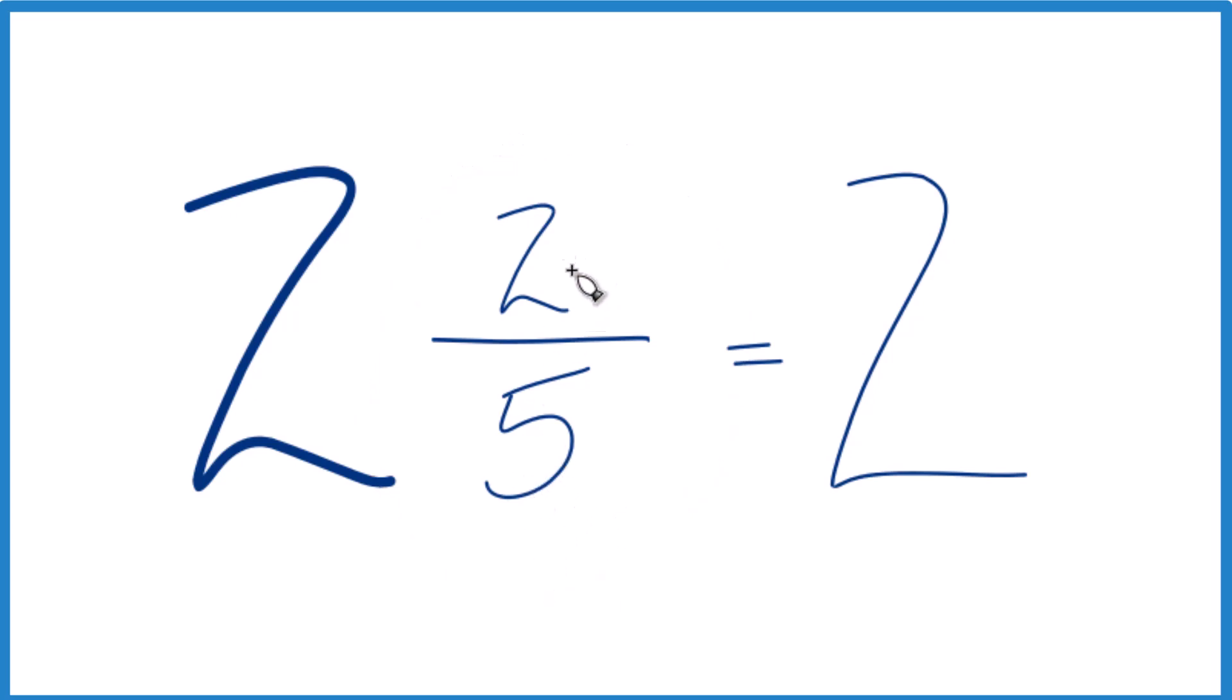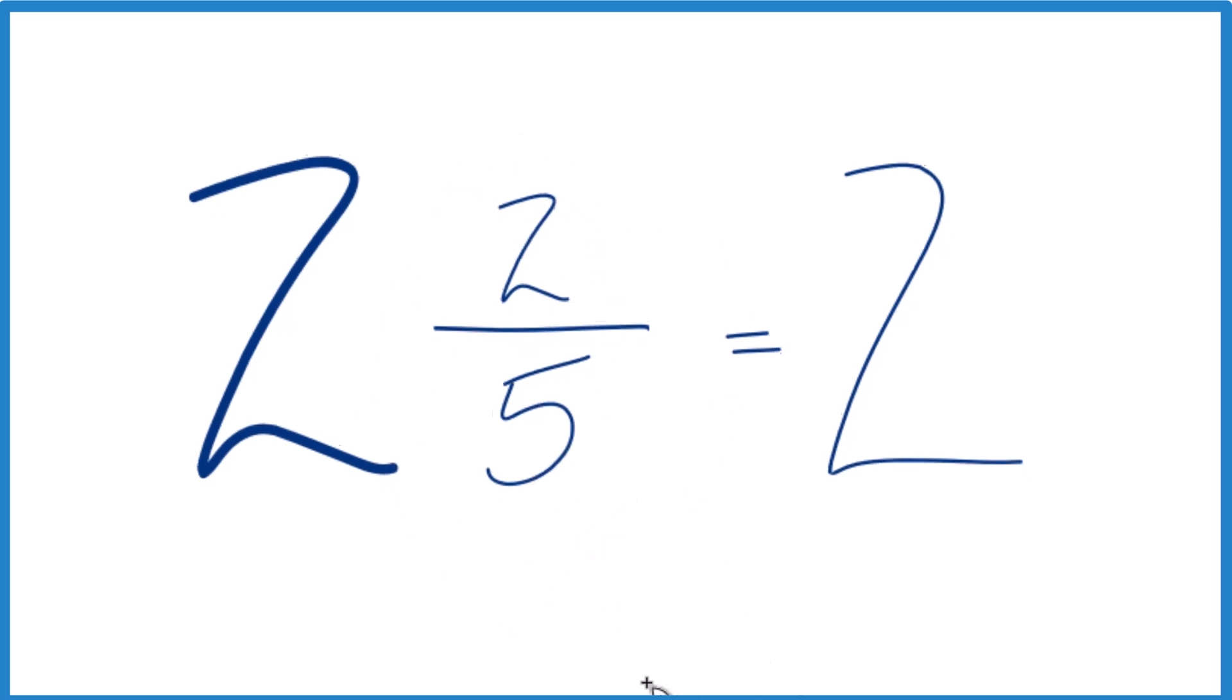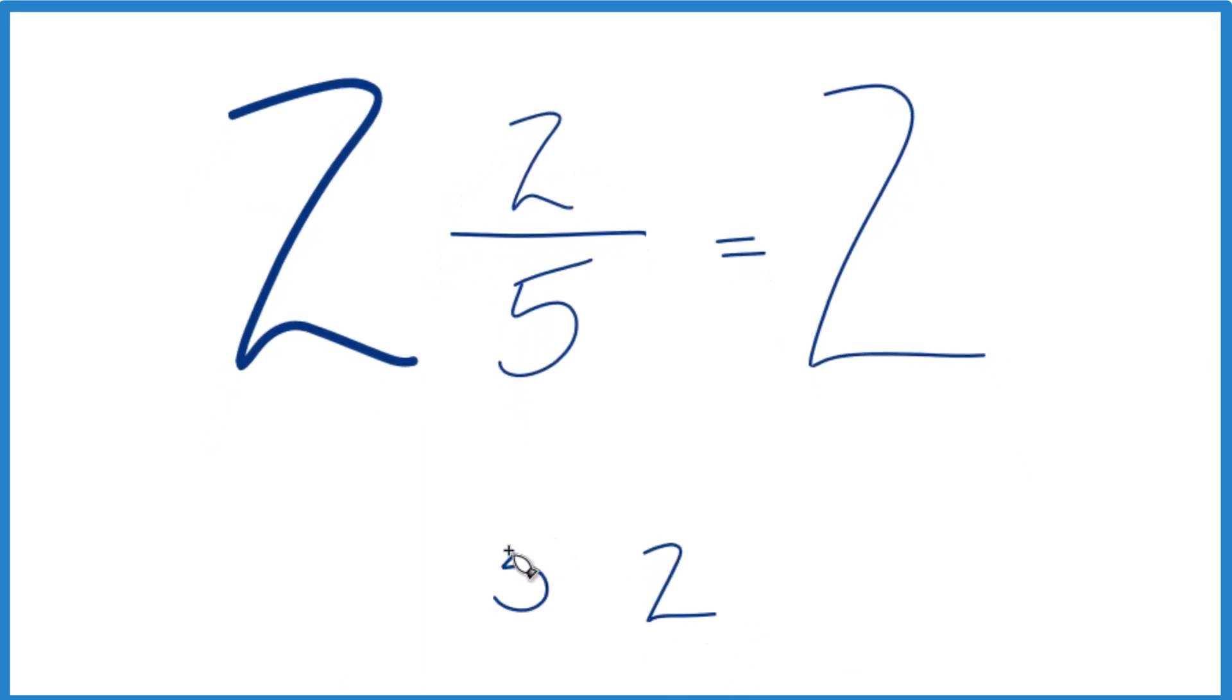So we could divide 2 by 5. We could just take 2, see how many times 5 goes into 2. 5 doesn't go into 2, but if we call this 20, put a 0 decimal point here,